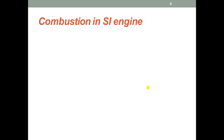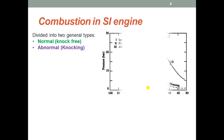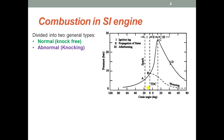Now we are going to discuss how combustion takes place in a spark ignition engine. Generally, combustion may be roughly divided into two types: normal - also called knock-free - and abnormal, also called knocking type of combustion. Here we make use of a pressure versus crank angle diagram to describe how combustion in an SI engine takes place.